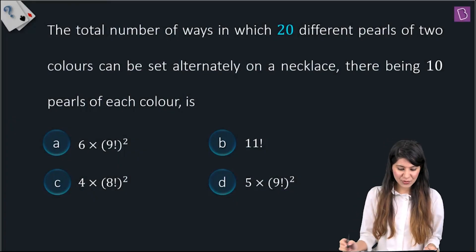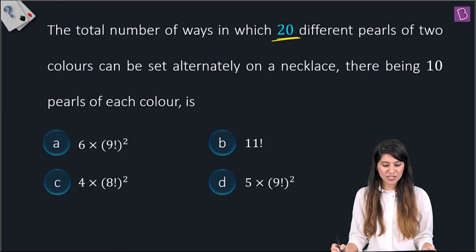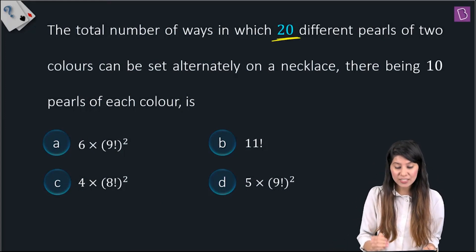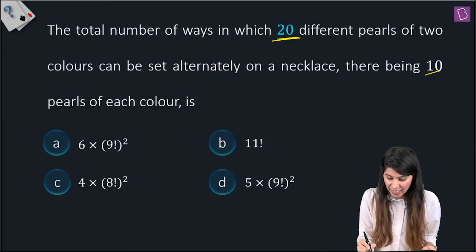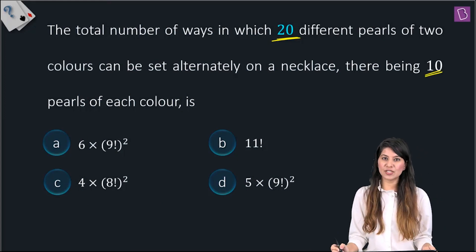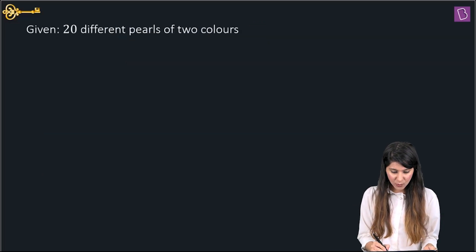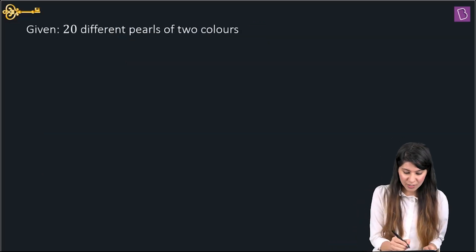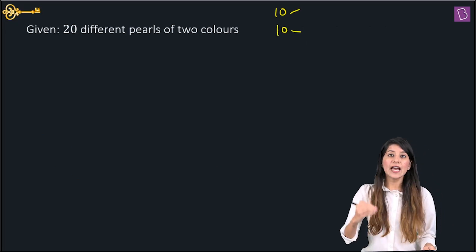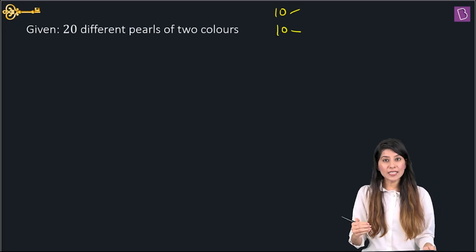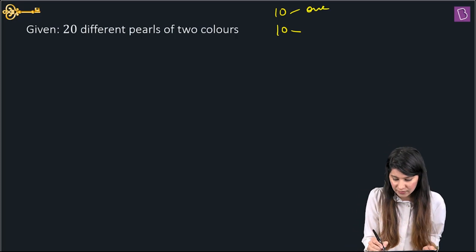In this question, we need to figure out the total number of ways in which 20 different pearls of two colors can be set alternately on a necklace, there being 10 pearls of each color. So there are 20 different pearls of two colors — 10 of one color and 10 of another color, and all 10 being different.